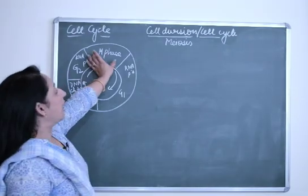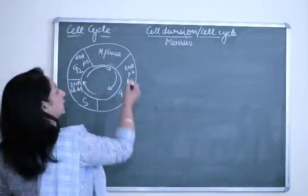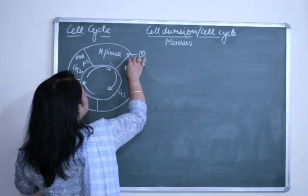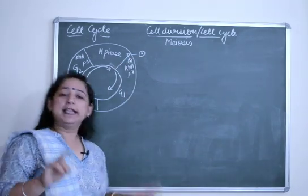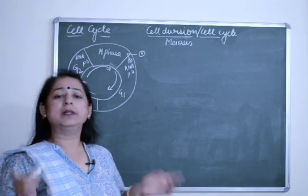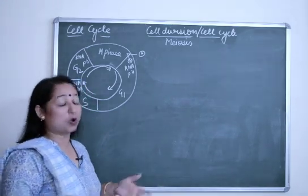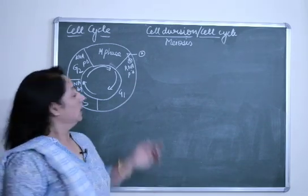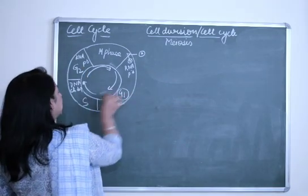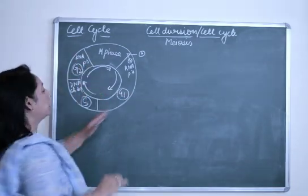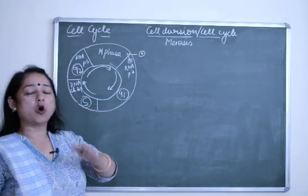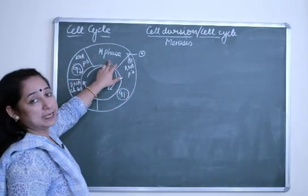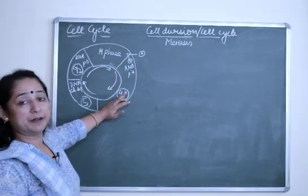After M phase, as we discussed in the previous video, two daughter cells are formed. These two daughter cells either will enter the resting phase and stay there, or will start with the process of the next cell division — the interphase, or the process of preparation of the cell for cell division. G1, S, and G2 phases are the phases in which the cell has to undergo these changes before it can undergo cell division.